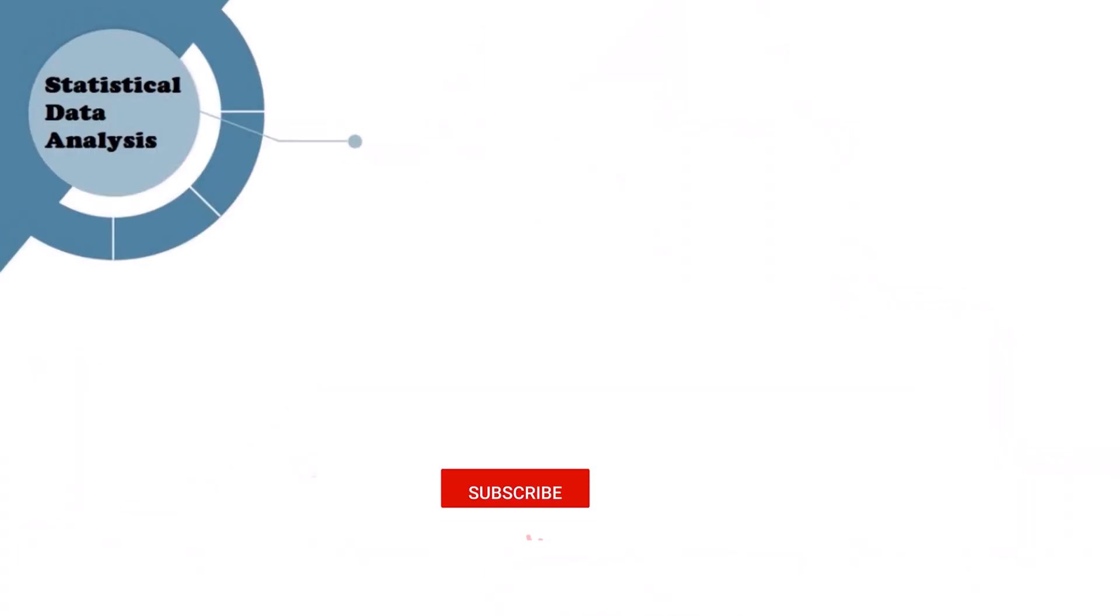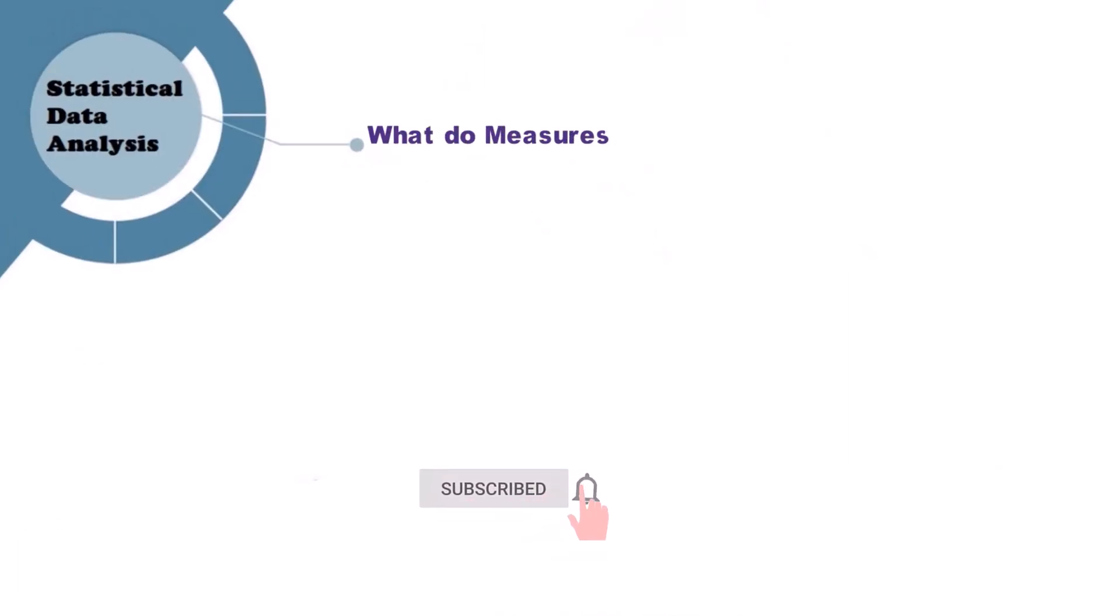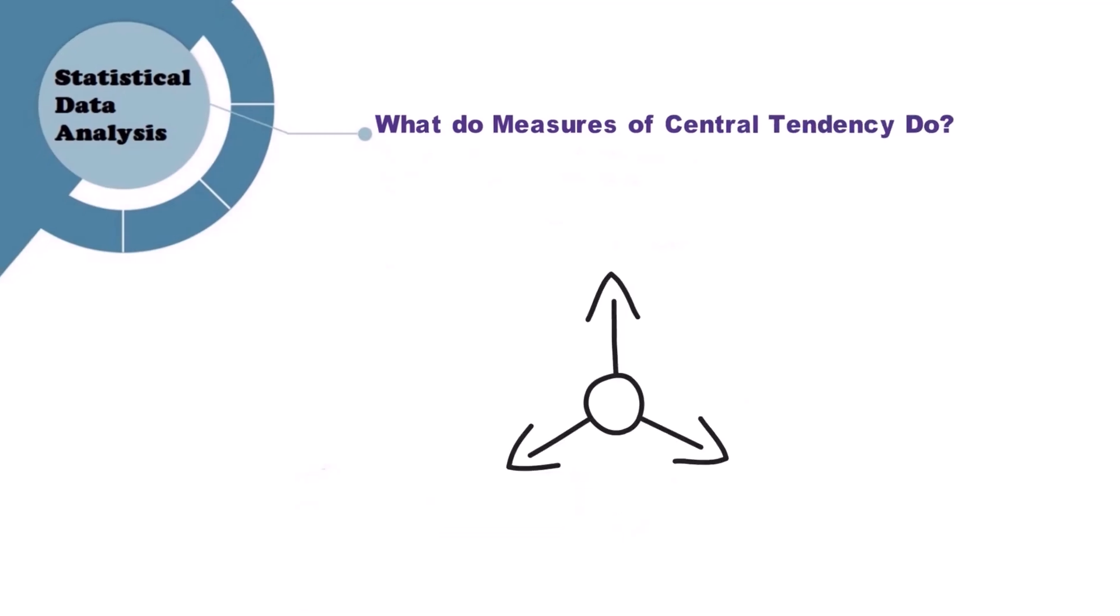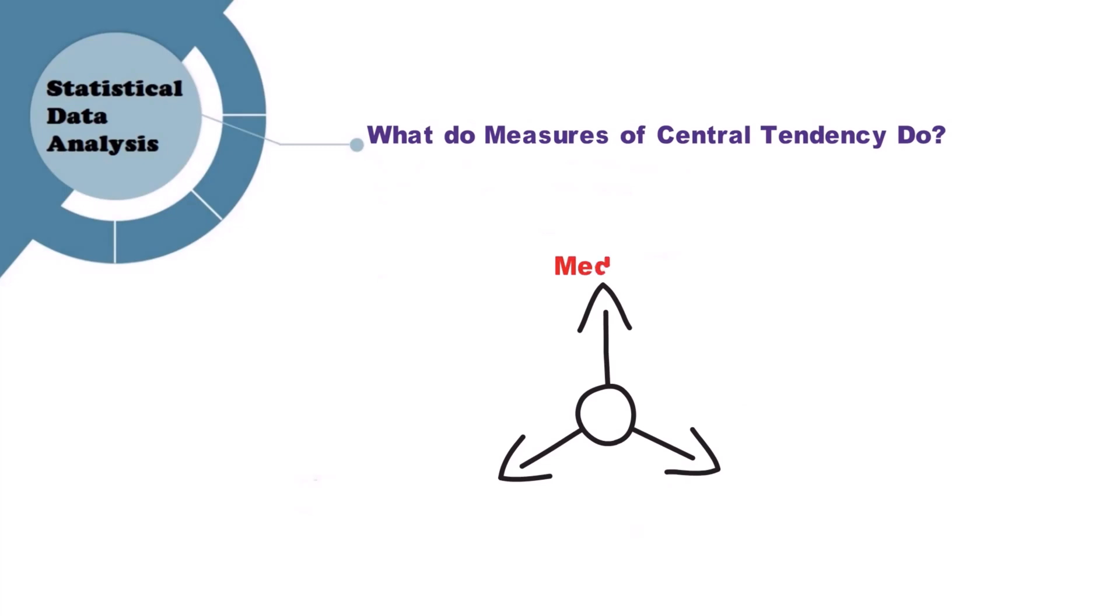What two measures of central tendency do? Well, it precisely describes where most of the values lie in a data set. Having said that, the three most heard and used measures of central tendency are: median - when considered from low to high, this is the value in the exact center.